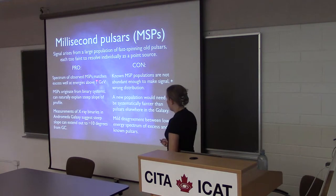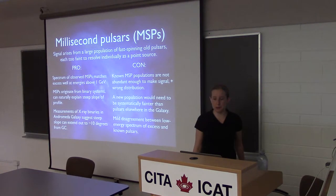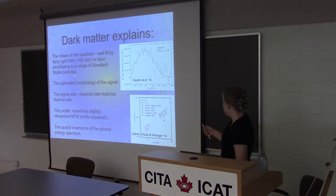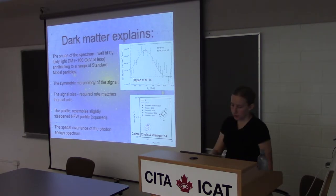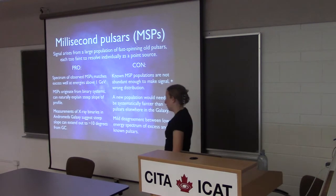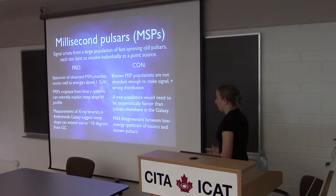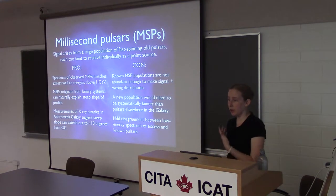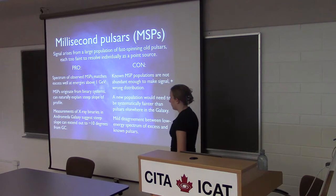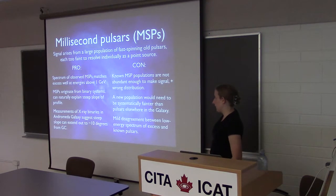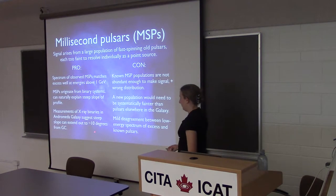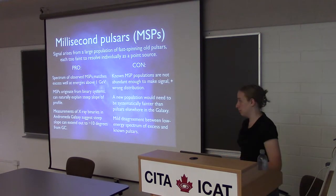Arguments in favor of the millisecond pulsar interpretation: the strongest argument is that if you look at the spectrum of observed millisecond pulsars in gamma rays at energies above 1 GeV, they actually line up very closely with what we see from the excess. If you overlay the average pulsar spectrum, it looks like this. There's also been argument that millisecond pulsars typically come from binary systems where an old pulsar is spun back up by a companion, which could naturally explain why the profile is so steep. And there are measurements of X-ray binaries in Andromeda suggesting this kind of steep slope extending out to about 1.5 kpc from the center — equivalent to 10 degrees from our galactic center.